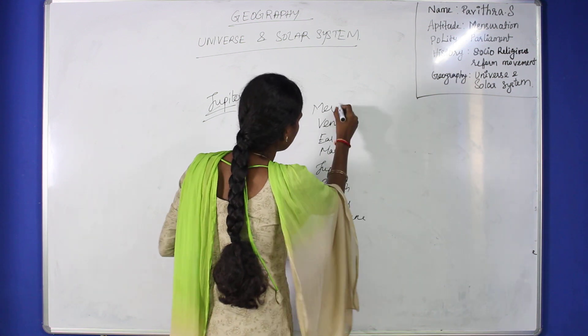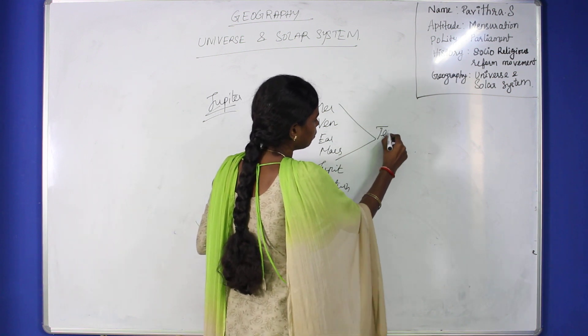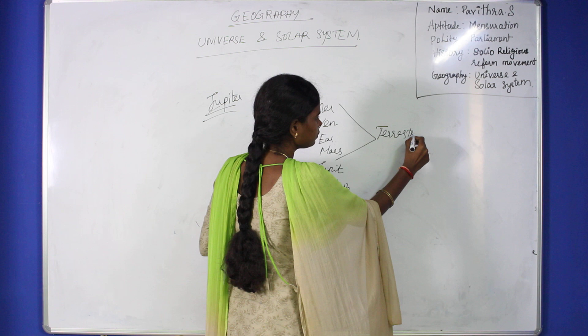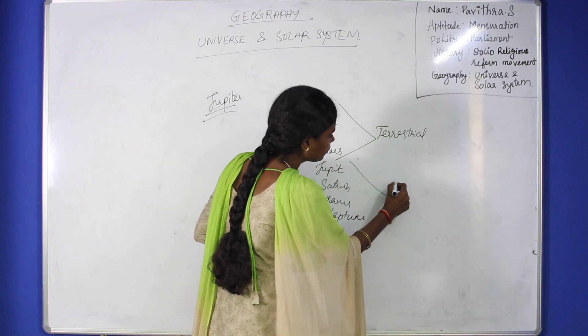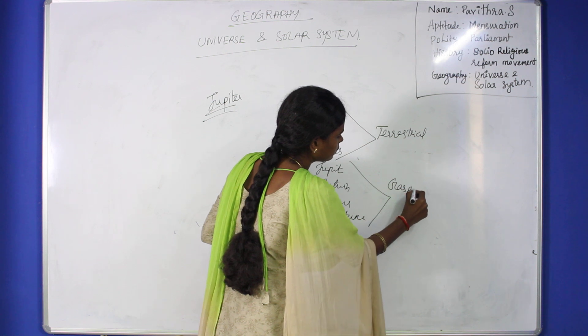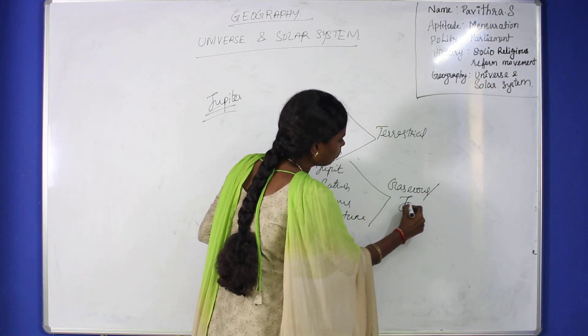Among the eight planets, the first four planets are terrestrial planets. The last four planets are gaseous planets, also called Jovian planets.